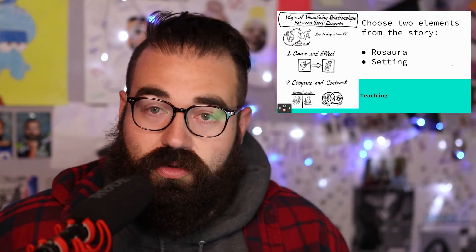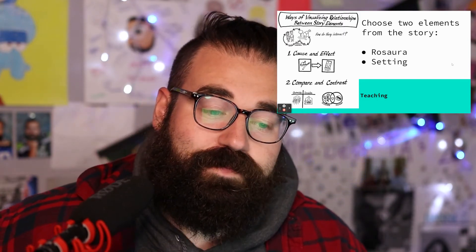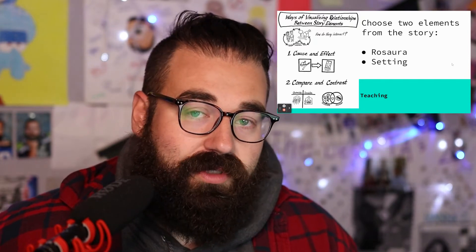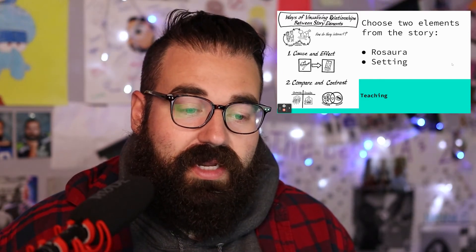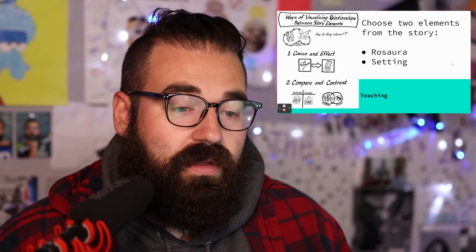Now we want to think about two story elements that could possibly influence each other, and so we're going to think about 'Stolen Party.' We're going to think about Rosara and then the setting — specifically the setting at one point in the story. I'm going to read this section and I want you to try to notice what Rosara's feelings are and how she's acting as it relates to her being in the kitchen. 'Rosara wanted to make sure. Carefully, she entered the kitchen and there she saw it. Deep in thought, inside its cage. It looked so funny that the girl stood there for a while watching. And later, every so often, she would slip out of the party unseen and go and admire it.'